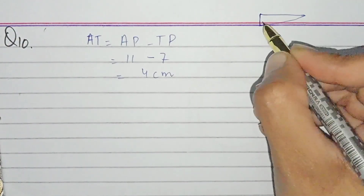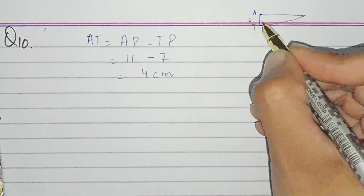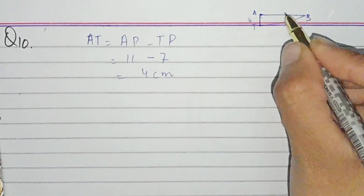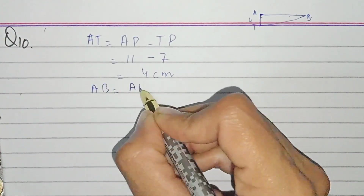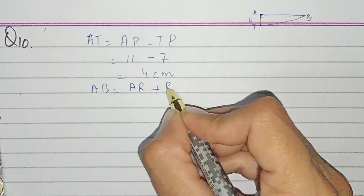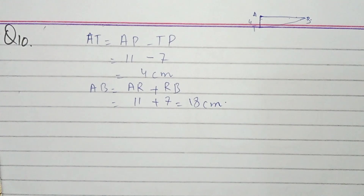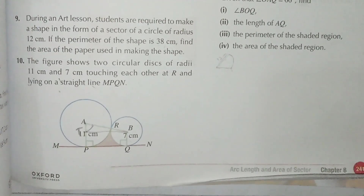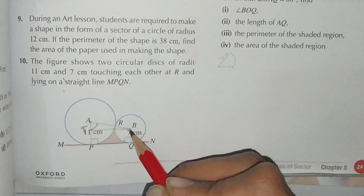In triangle ATB, AT = 4 centimeters. AB = AR + RB = 11 + 7 = 18 centimeters. So we have the base AT = 4 and the hypotenuse AB = 18.